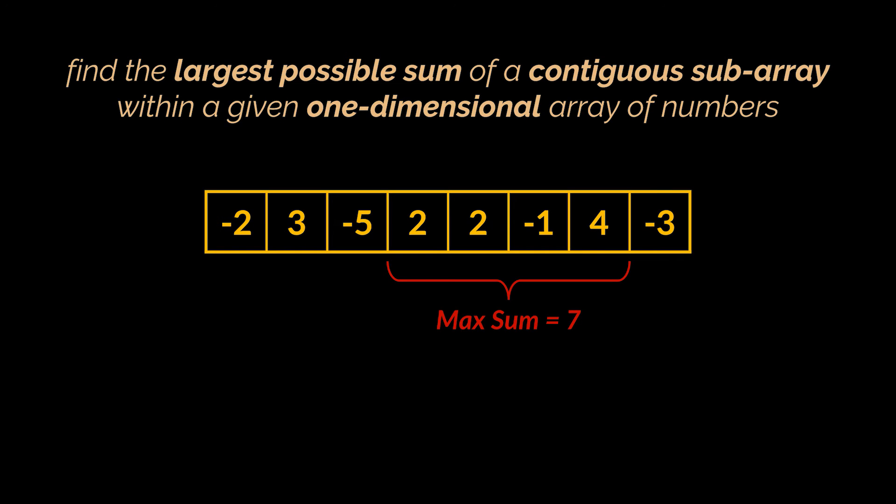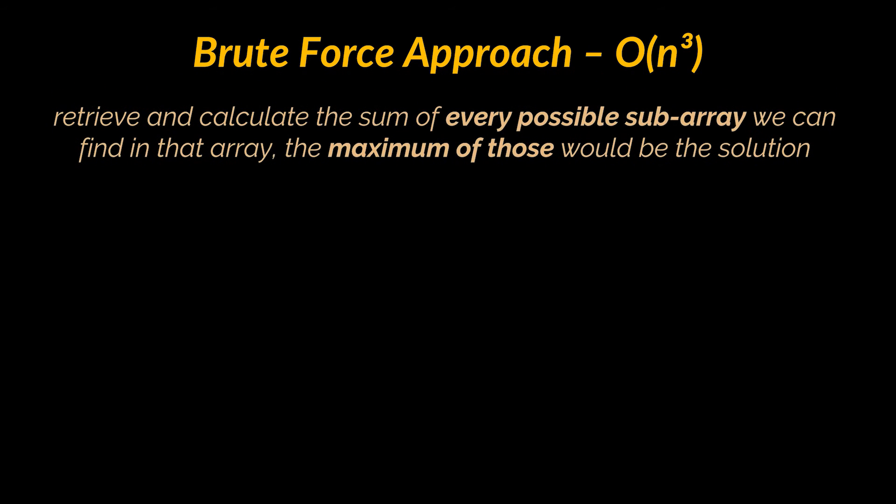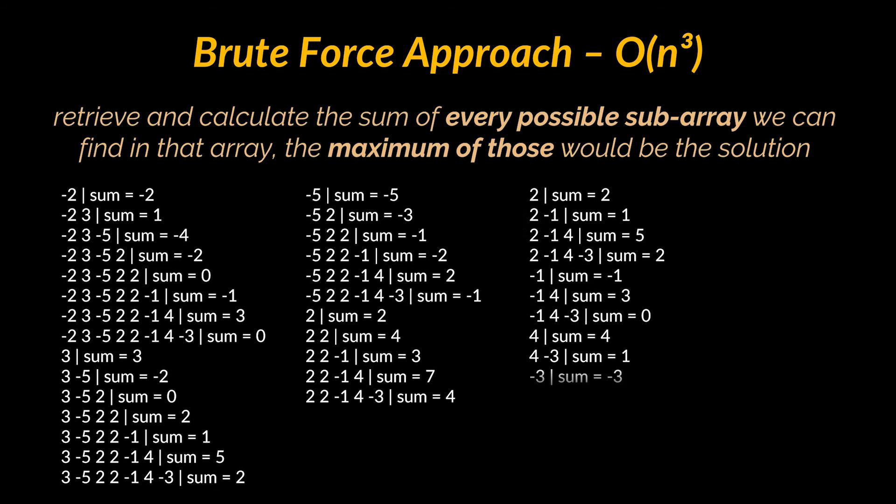Now let's have a look at a very obvious solution to the given problem and that's the brute force approach. Very obvious indeed but not such a good solution is to retrieve and calculate the sum of every possible subarray we can find in that array, and the maximum of those would be the solution. So in this example we would have all of the following subarrays alongside their corresponding maximums. Let's call these local maximums. Then after we find every possible local maximum we can find the maximum of these local maximums and we would get the maximum sum possible. Let's call this result the global maximum.